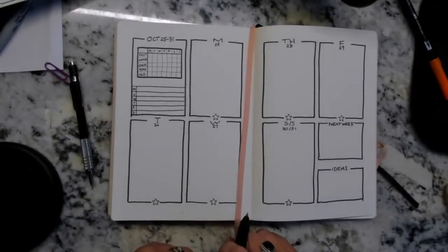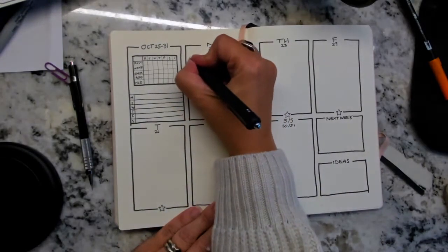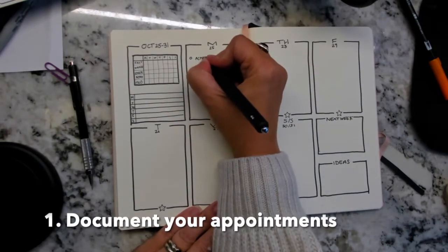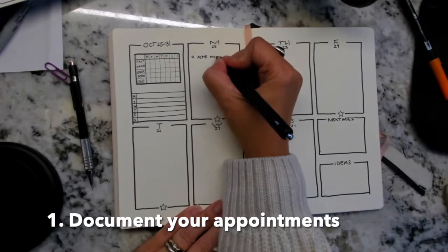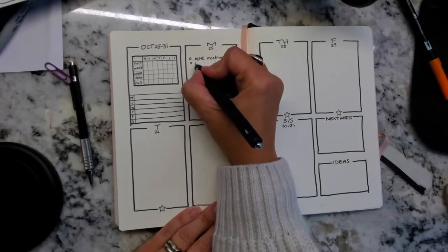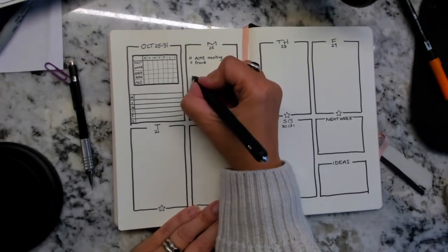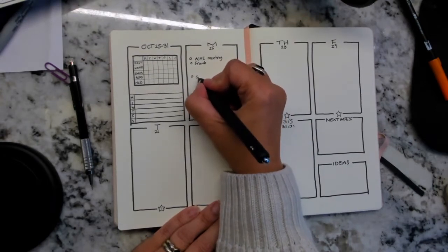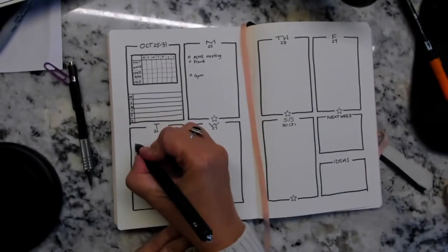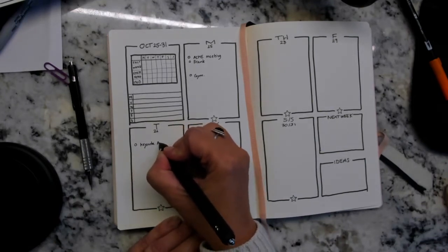At the start of the week, I go through my calendar and I put in all of the appointments. So I may have a meeting with Acme, my favorite client, and I would put that in. I might have another meeting with Frank later in the day. Often on Mondays, I go to the gym and I work with my trainer at the gym.